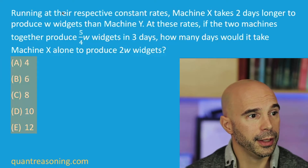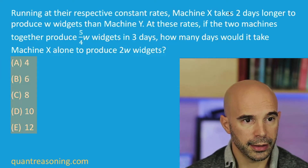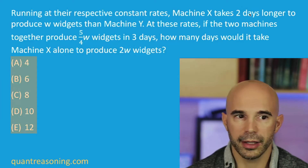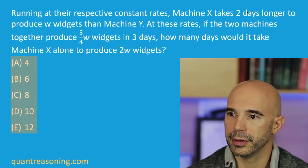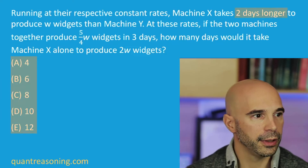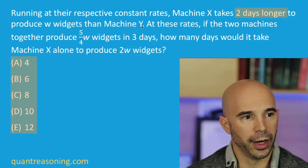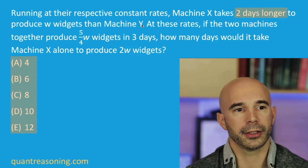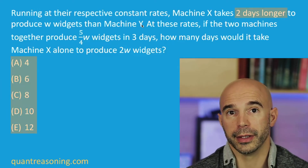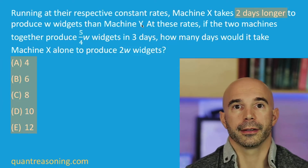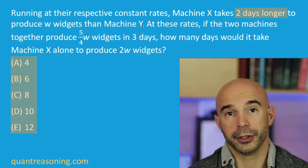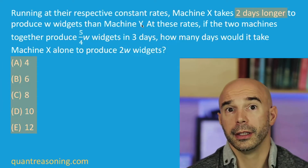So then I start reading. Running at their respective constant rates, machine X takes — not twice as long, not 20% longer, not some kind of multiplicative ratio-type comparison — but rather an additive change: two days longer to produce W widgets than machine Y. So I've got to stop there. Why am I making such a big deal that this is not a ratio? With a difference of two, the ratio could be anything — three to one, five to three, ten to eight. So I don't know what the ratio is.